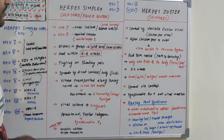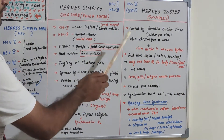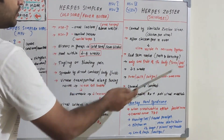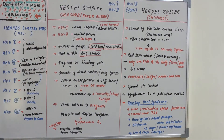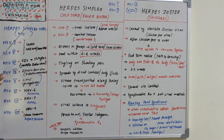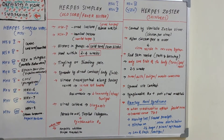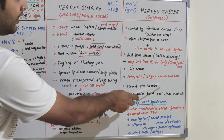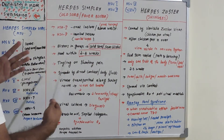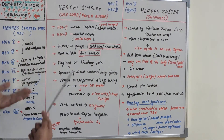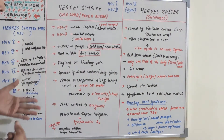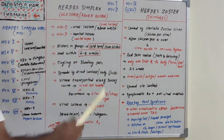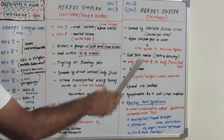The most striking feature of herpes zoster is that it is always unilateral — only one side of the body is affected, whether the face, neck, or torso. This is because it follows the nerve pathway. Other common symptoms include fever, chills, fatigue, and muscle weakness. Similar to herpes simplex, it also spreads via lesion contact. Symptomatic treatment or antiviral medications can be given for herpes zoster. It is also known as shingles.